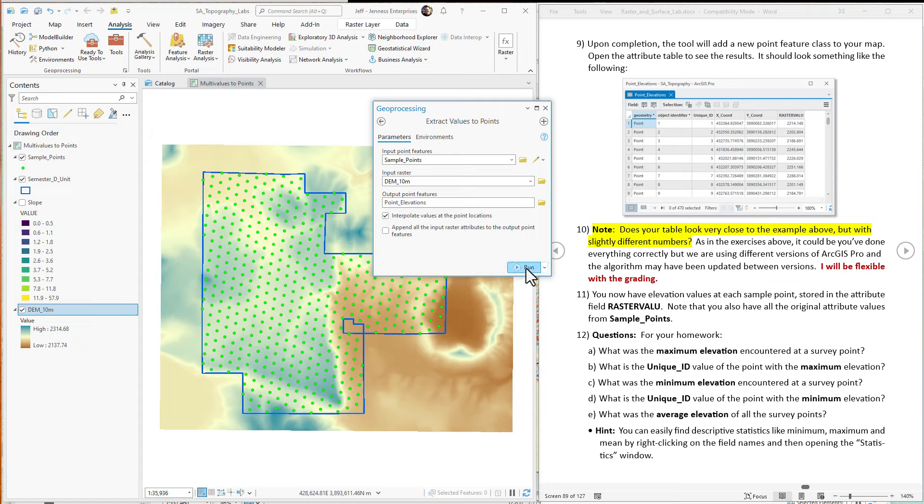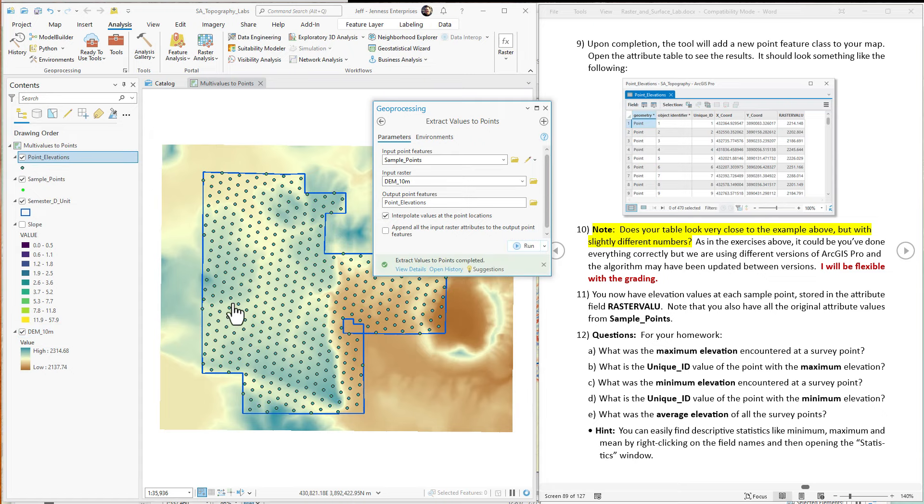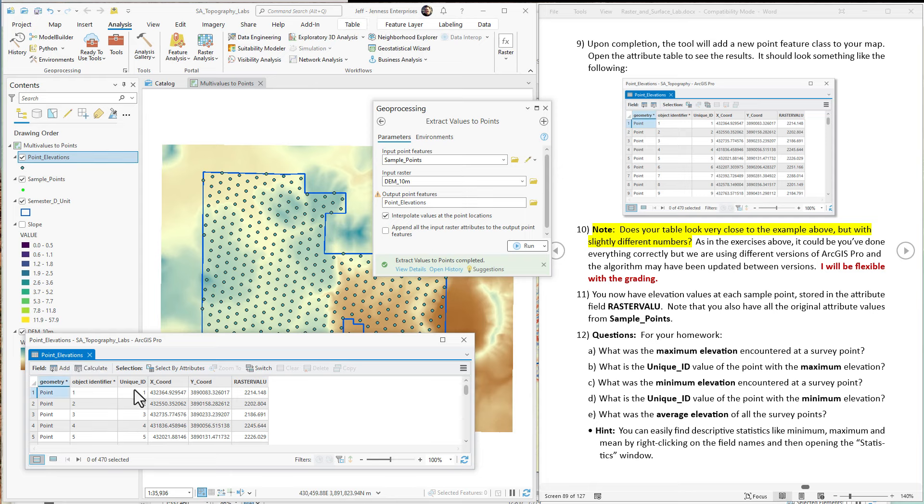Okay, let's just confirm we're all fixed and ready to go. Yep, everything's set. Just hit run, goes to work, adds our new point feature class, point elevations. If we open the attribute table here, we'll see it has all the original attribute values that were in the original point feature class, plus this thing called raster value.